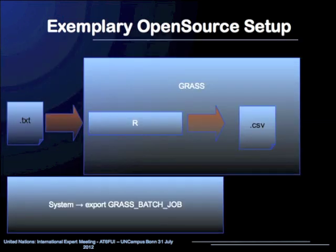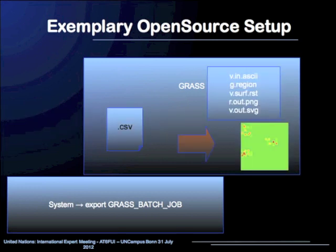With the generated text file, a kind of preprocessing for further visualization in GRASS is done in R, producing a CSV file that will then be imported into GRASS. There, using the SERV RST module, a visual representation is computed and the generated maps are provided for the web interface producing PNG and SVG files.